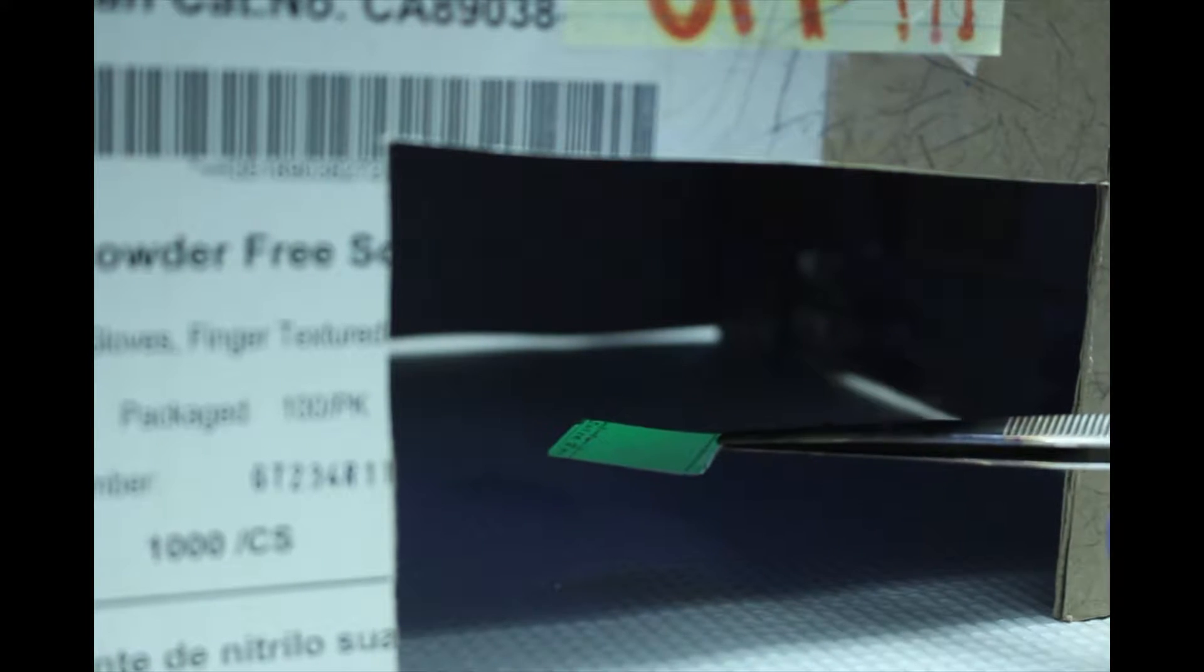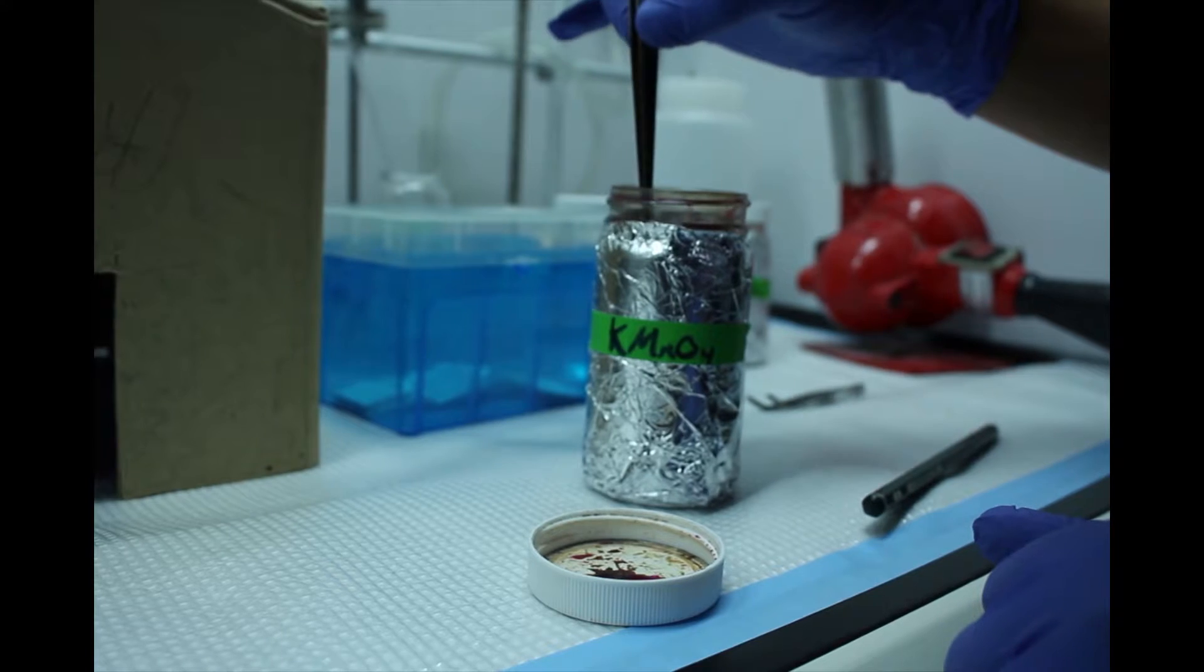Once the TLC plate has been developed in the chamber, the spots can be visualized by a shortwave UV lamp and a TLC stain.